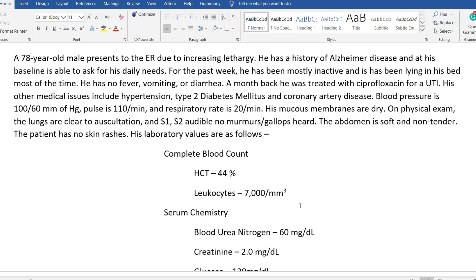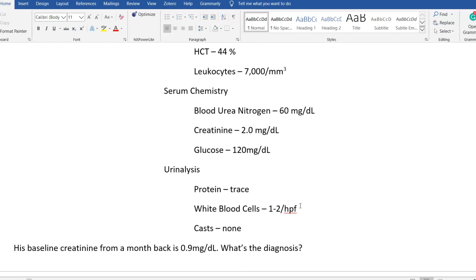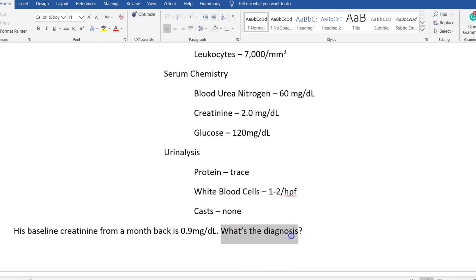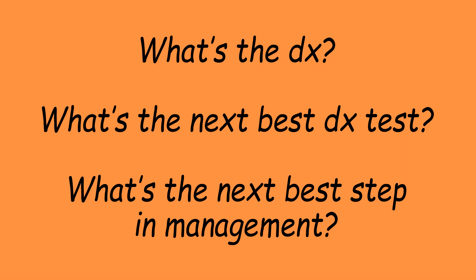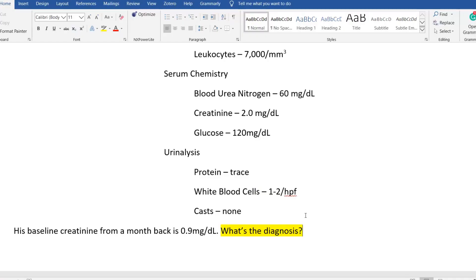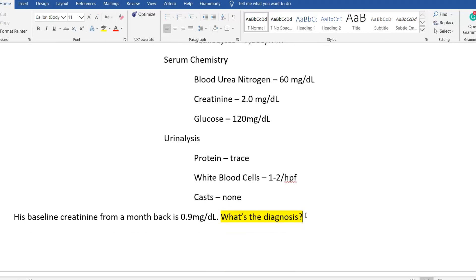A very common strategy — and one I also use — is to look at the question stem last. The first thing I look at is the actual question being asked, such as 'What is the diagnosis?' Right from the top of my head I know exactly what I need to find as I read through the vignette, rather than searching for unrelated information. If the question asks for the next best step, then the diagnosis is usually provided and you should be thinking about treatment or whether a diagnostic step is required.